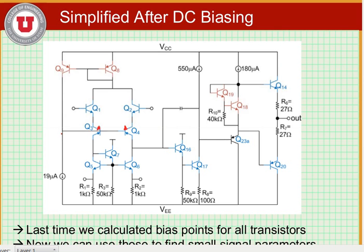Alright, so in the last part of the lesson we learned what all of the bias currents through all of the transistors were. Now we're going to start doing small signal analysis, looking at the first stage, which consists of Q1, Q2, Q3, Q4, Q5, Q6, and Q7. Q1 through Q4 are a differential pair — one that we haven't seen before, so we'll examine that in a moment — and Q5 through Q7 form a beta helper current mirror.